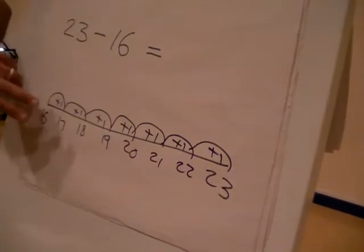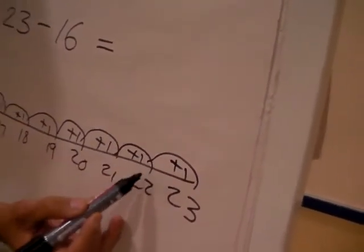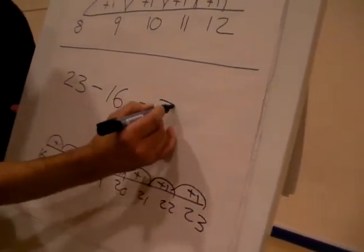And what we do is we add up all these jumps together, so we've done 1, 2, 3, 4, 5, 6, 7, so everybody should have the answer of 7.